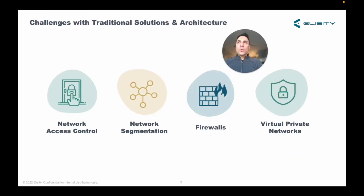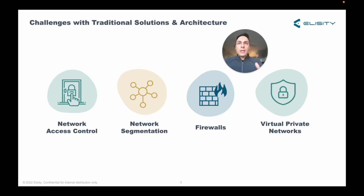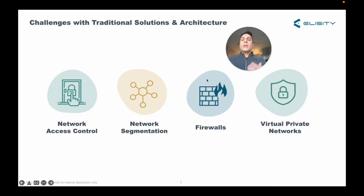That begs the question: why don't traditional methods of network security solve for all these things? When I say traditional network security methods, I'm talking about firewalls, network access control solutions, VPNs, network segmentation features like VRFs, VLANs, private VLANs, and ACLs. Why doesn't any of that cut it for this day and age? It really comes down to three main things: identity, policy, and the distribution of that policy across the entire network architecture.